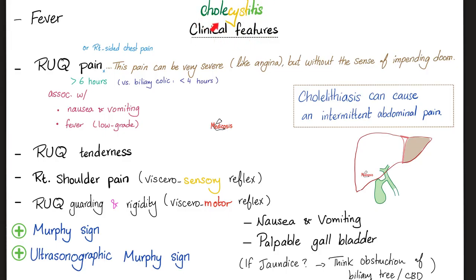Clinical features of cholecystitis: fever, right upper quadrant pain, right upper quadrant tenderness, and right shoulder pain — which is referred pain, a viscero-sensory reflex. Right upper quadrant guarding rigidity, and rebound tenderness if you inflame the peritoneum — this is a viscero-motor reflex. And then positive Murphy sign.